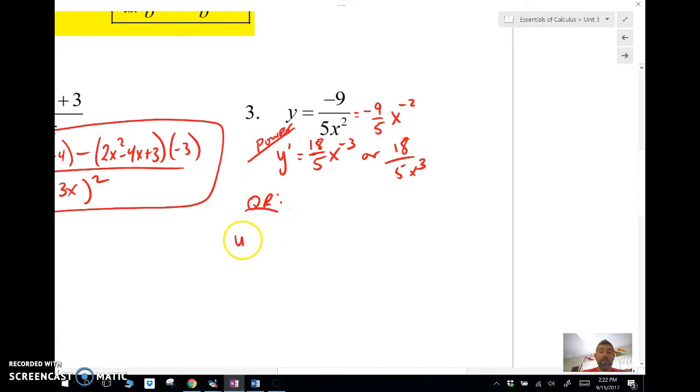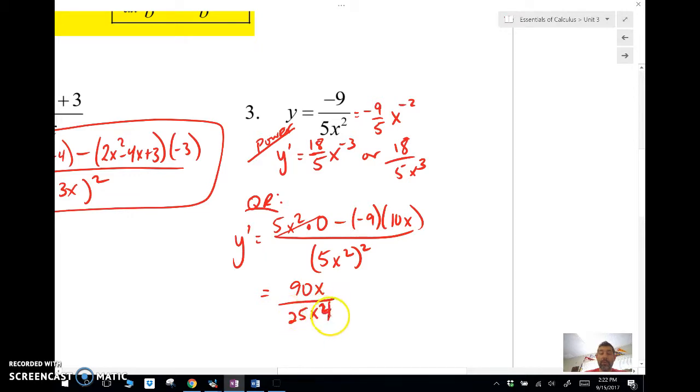If I did want to use the quotient rule, the quotient rule would work. I would do low, 5x squared, d high, derivative of the negative 9 is 0, minus high d low, 10x, square the bottom and away we go. Simplifying that out, this is 0, I get 90x over 25x to the fourth. And that, of course, is going to simplify to 18 over 5x cubed, which is the same thing as we got here.